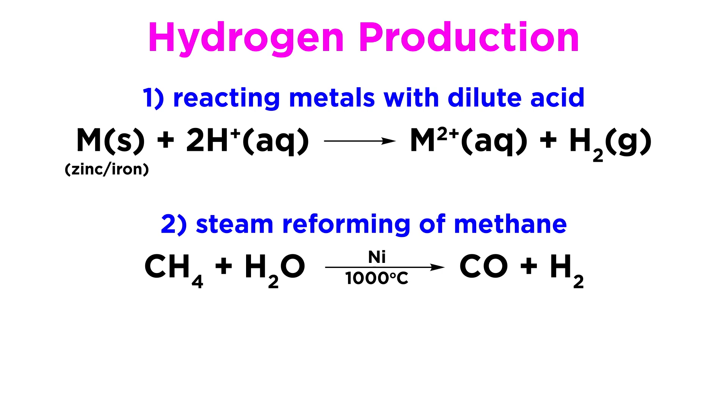Another method is by the steam reforming of methane with nickel catalyst. Methane and water are heated to a thousand degrees Celsius, which produces carbon monoxide and hydrogen gas.